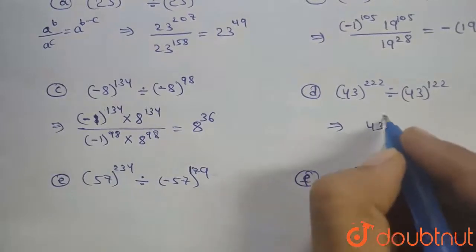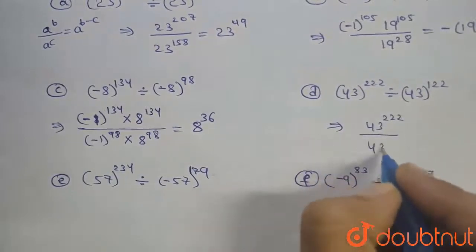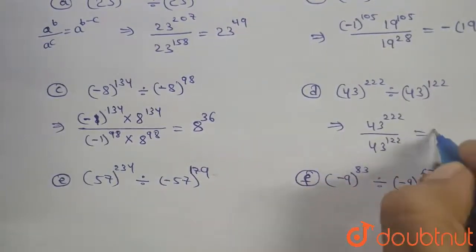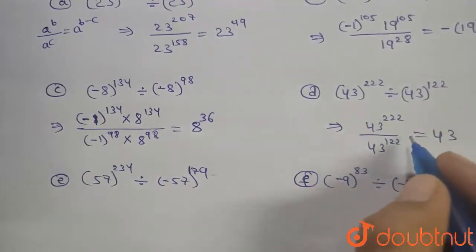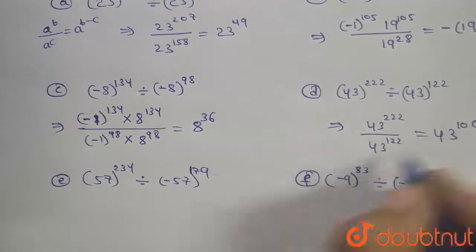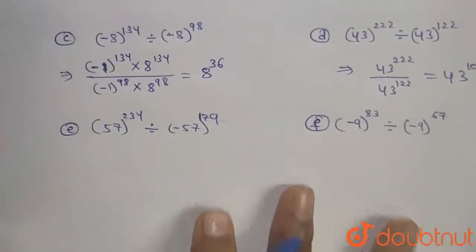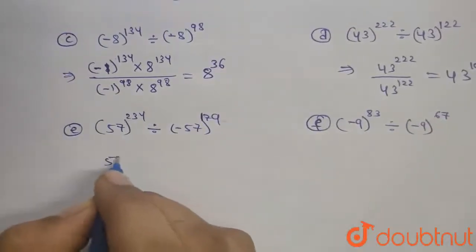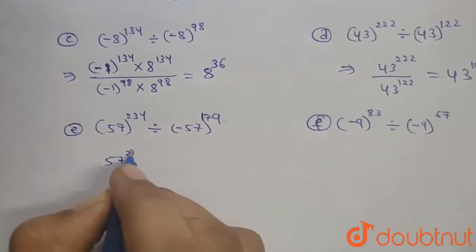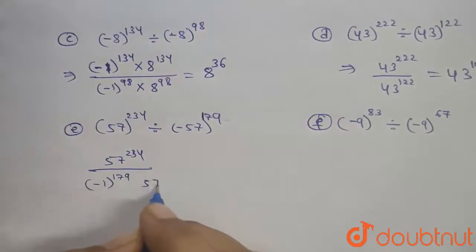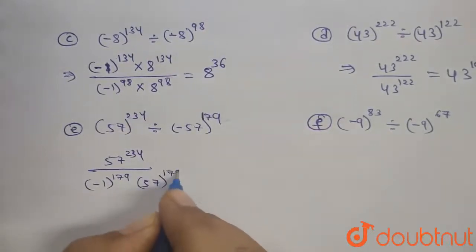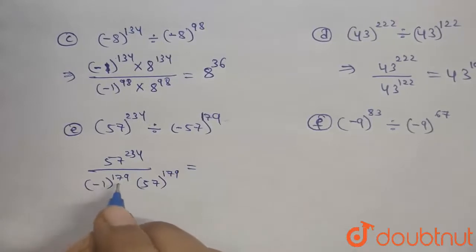43 power 222 divided by 43 power 122 which is equal to 43 power 222 minus 122 is 43 power 100. 57 power 234 divided by minus 1 power 179 into 57 power 179. Minus 1 power 179 is odd number, so the odd number is negative.